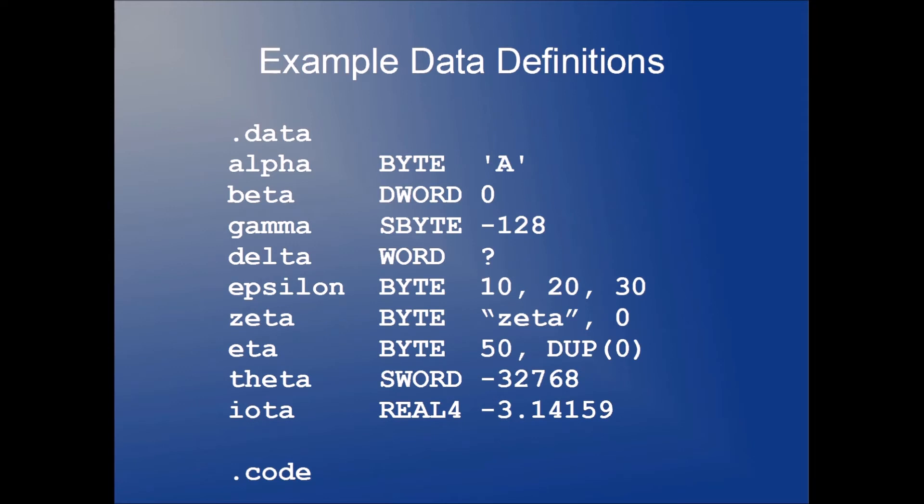Here are some example data definitions. These are variables that we are creating. Here's a snippet of code in the data segment of the assembly program is where we're going to define our different variables. Let's just go through this list briefly. We have alpha. We've defined a variable named alpha, which is a byte. And we have a single initializer, which is the character literal A. And character literals are characters that are specified with single quotes or double quotes.